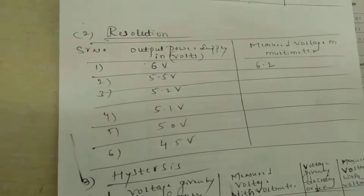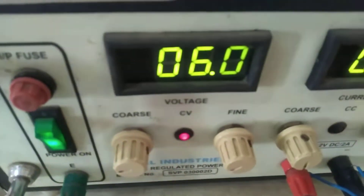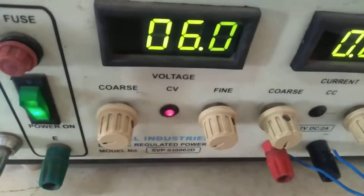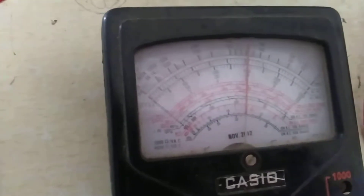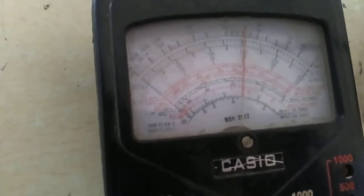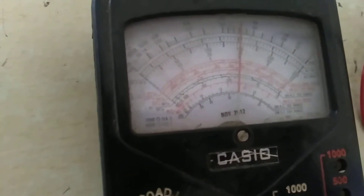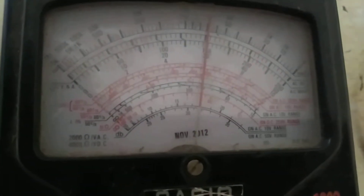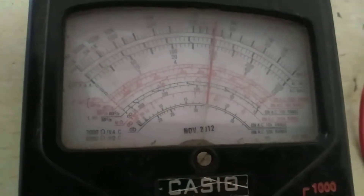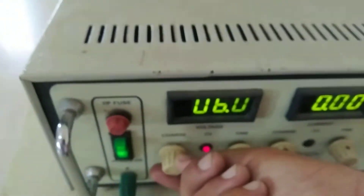First, provide 6 volts. I have already given 6 volts. On the analog multimeter, we are getting a reading nearer to 6 volts — it crosses towards 6 volts and reads about 6.2 volts. So that is the multimeter response.